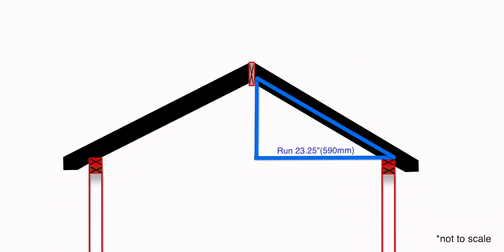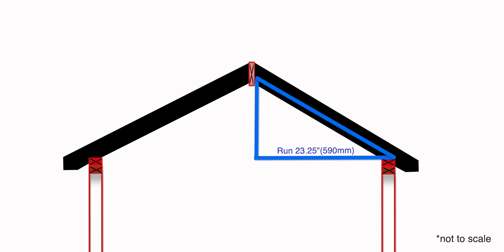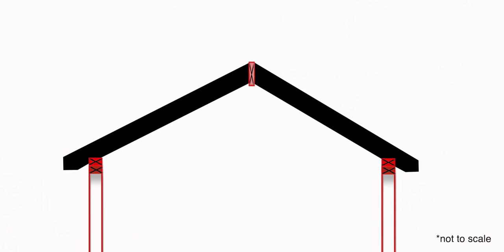Back at the drawing, we need to translate the unit length of 13.42 into our theoretical rafter length. To do that, we first need to convert our run that is in inches to feet. That's easily done by dividing our total run of 23.25 by 12, which is how many inches are in one foot. That number is 1.94 if I round up. This number is now in units of feet, meaning there are 1.94 — almost two full units of the 13.42 — in our rafter length. Multiply the 1.94 times 13.42 for a theoretical rafter length of 26 inches.